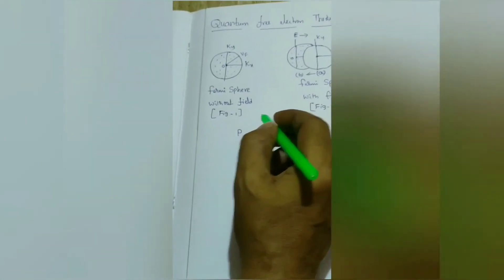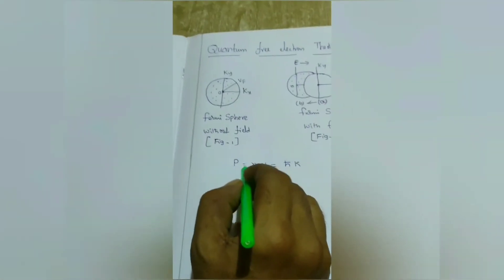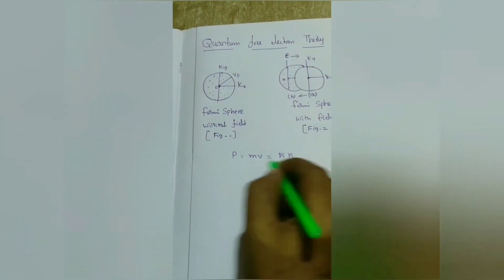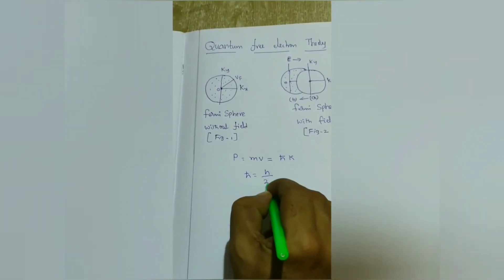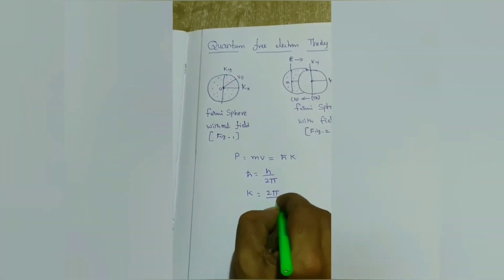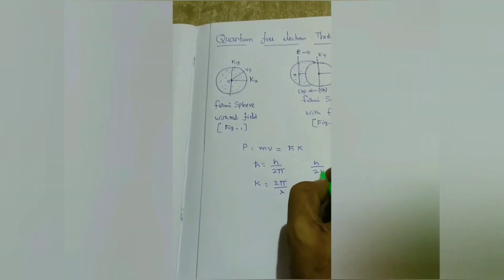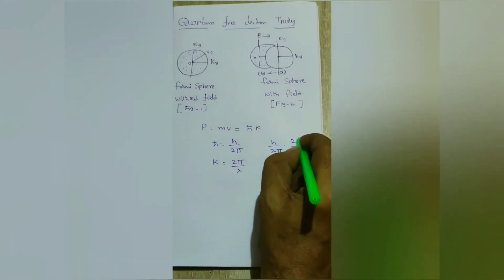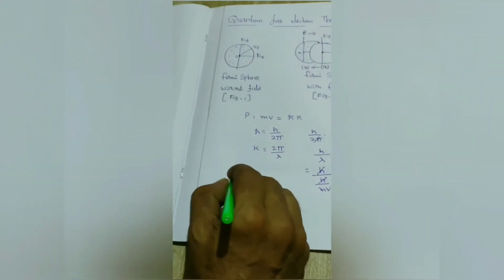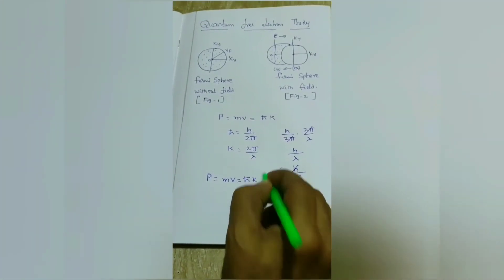According to quantum electron theory, momentum of electron p = mv is equal to ℏk. Here, ℏ = h/2π and k = 2π/λ. From these two values, h/2π × 2π/λ = h/λ = mv. Therefore, p = mv = ℏk. This is equation 1.